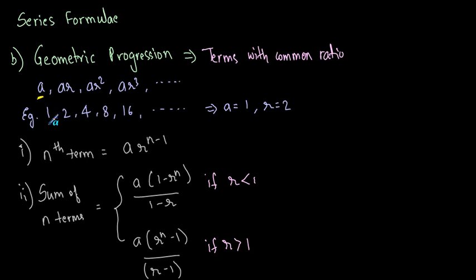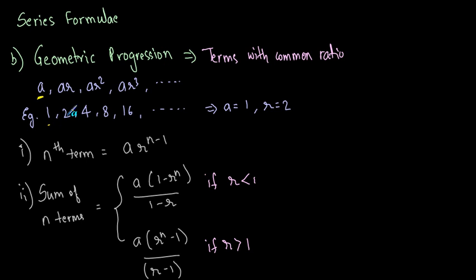The example 1, 2, 4, 8, 16 is an example of a geometric progression. The first term a is 1 and the ratio is 2. To get the second term, multiply the first term by the ratio: 1 times 2 is 2, which again multiplied by 2 yields the third term, which is 4, and so on.